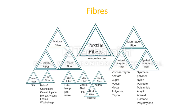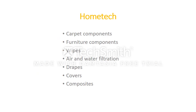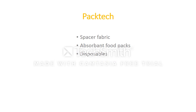Now let us look at application areas in detail. Every area is given a unique name and lots of individual uses are listed. In home tech — whatever is used in a home — many items now use technical textile, such as carpet components, furniture components, consumer and industrial wipes, air and water filtration, interior design, drapes, covers, ticking, and composites. Similarly, in packaging technology, known as pack tech, it includes packaging materials such as spacer fabric, absorbent food packs, scraps, and disposables.